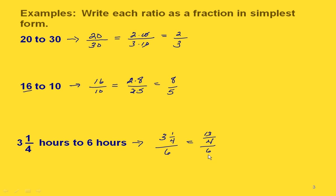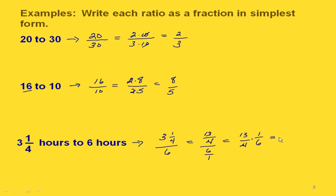Since this is a complex fraction, we write our six as six over one. Now we're dividing two fractions, so we rewrite as multiplication by flipping the bottom fraction. Our 13 is prime, so there's nothing to factor out of either. We end up with 13 twenty-fourths in simplest form.